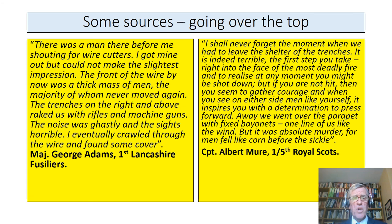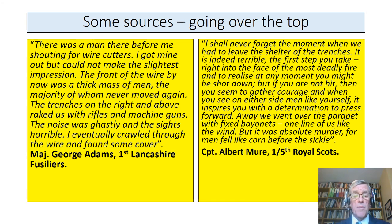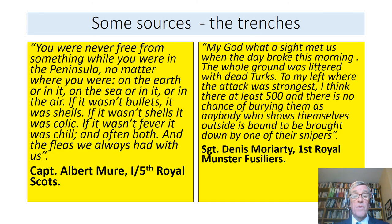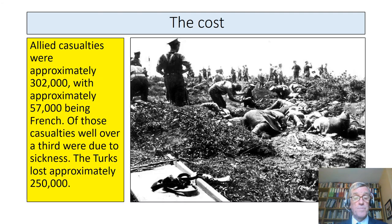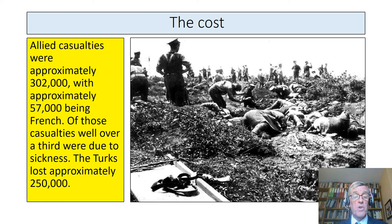There are some primary sources — diaries and letters from soldiers involved in the campaign — covering going over the top and trench life, which teachers may wish to use. The cost: Allied casualties were approximately 302,000, it was meant to be a quick victory and easy defeat of the Turks, with approximately 57,000 being French. Of those casualties, well over a third were due to sickness, mainly dysentery. The Turks lost approximately 250,000.